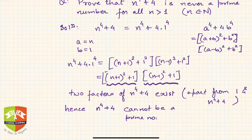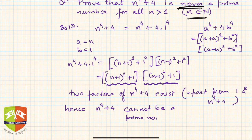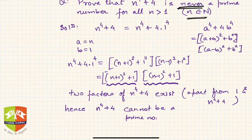The question is: prove that n to the power 4 plus 4 is never a prime number for all n greater than 1, where n belongs to the natural numbers. Clearly, if n equals 1, then 1 plus 4 is 5, which is a prime number. Hence the condition n greater than 1 has been given.